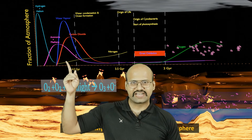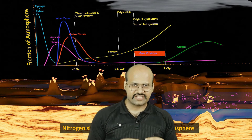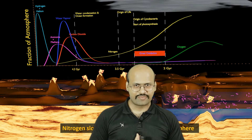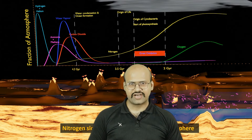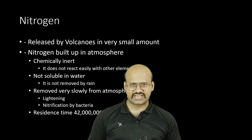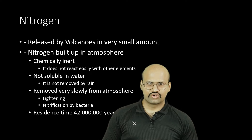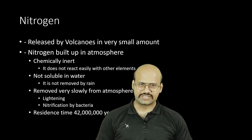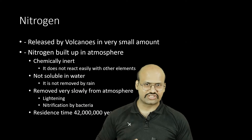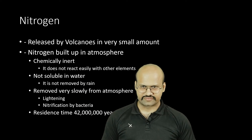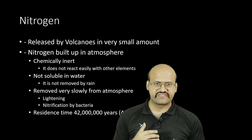The amount of nitrogen kept increasing. Nitrogen was emitted in a very small amount from volcanoes, but how did it become the most important element in our atmosphere today? To understand this, we have to see that nitrogen is actually chemically inert. For billions of years of emission, it did not react with anything, and it is not soluble in water, so it is not easily removed from the atmosphere.